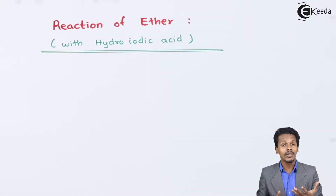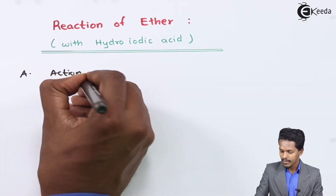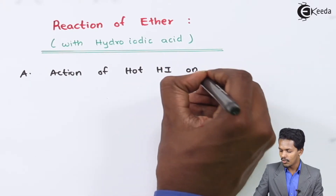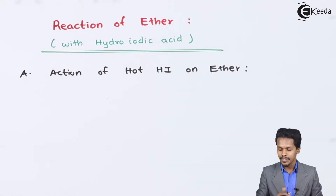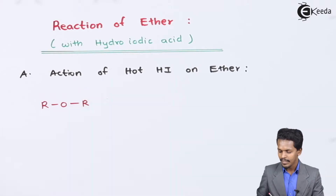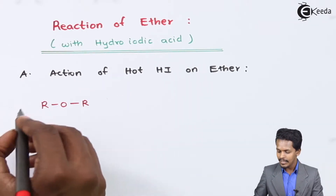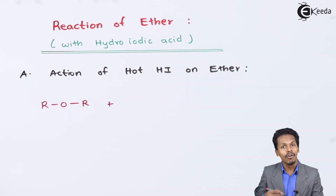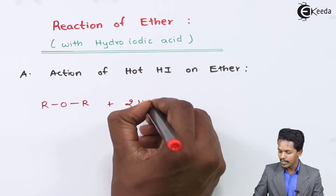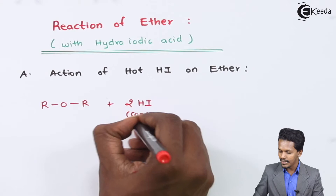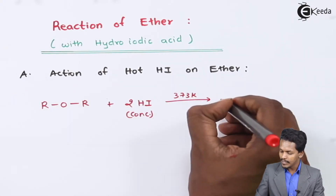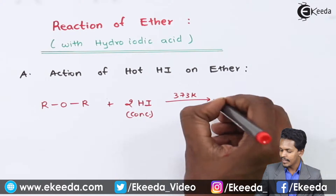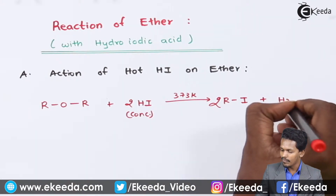Let me start with the action of hot hydroiodic acid on ether. For a simple ether represented as ROR, where both alkyl groups are the same, when treated with hot HI at 373 Kelvin, two moles of hot HI are used. The products are two moles of RI along with water as a by-product, giving us an alkyl halide.